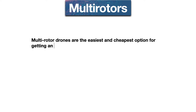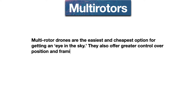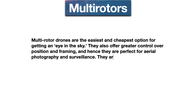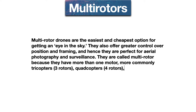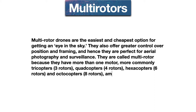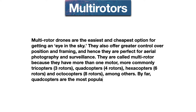Multi-rotor drones are the easiest and cheapest option for getting an eye in the sky. They offer greater control over position and framing, making them perfect for aerial photography and surveillance. They are called multi-rotor because they have more than one motor — more commonly tricopters with three rotors, quadcopters with four, hexacopters with six, and octocopters with eight rotors.